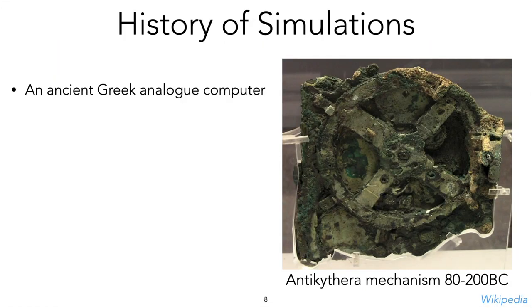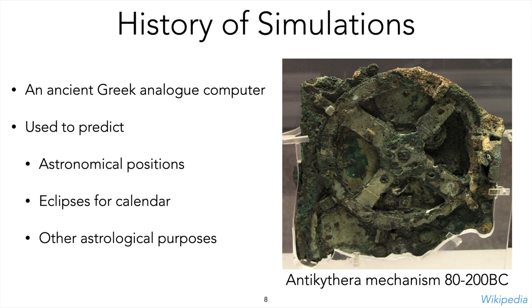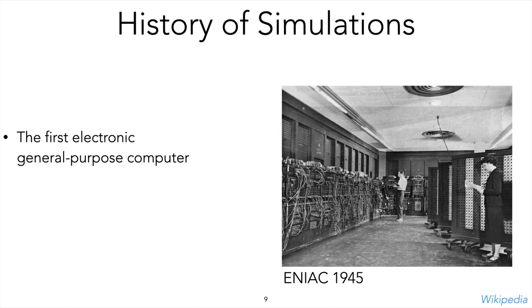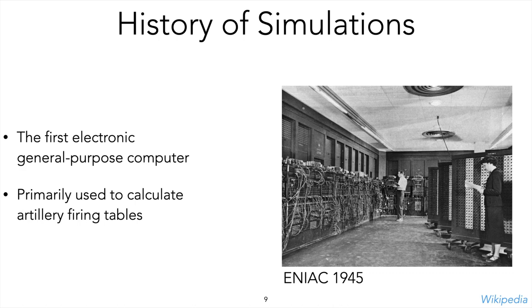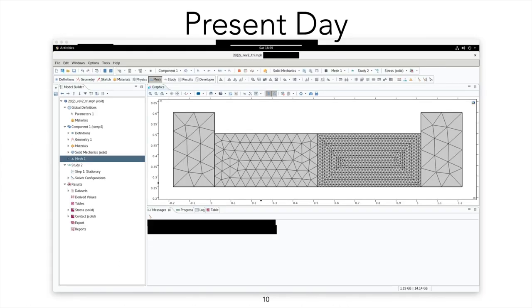Simulation has been around for a very long time and was initially used to predict astronomical positions, eclipses, and other astrological purposes. In fact, the first general purpose computer was designed and invented for solving what were at that point simple simulations. But how does it look now? Here is an example from modern software where we are trying to set up a reasonably simple simulation.